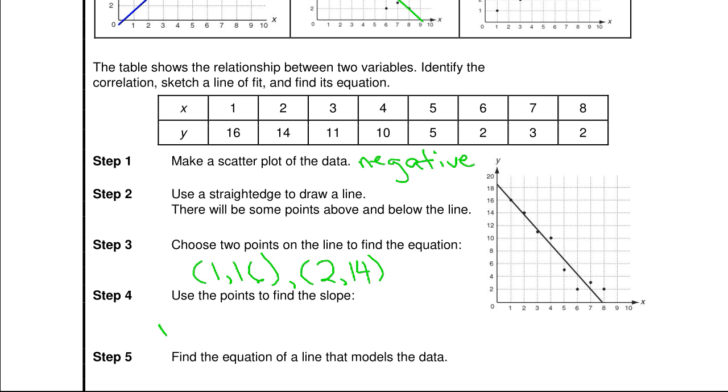So the slope is the difference in y's over the difference in x's. So that would be negative two over one, which is negative two.